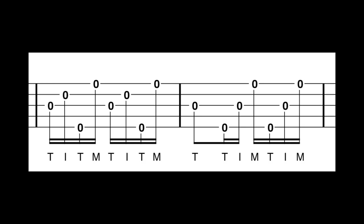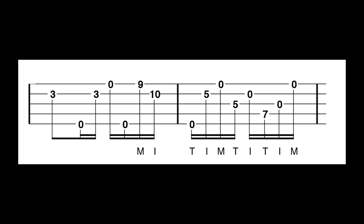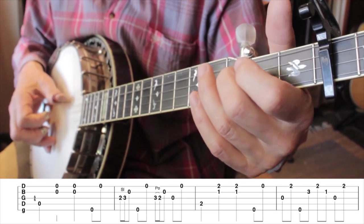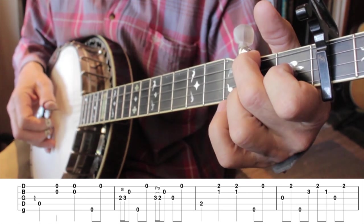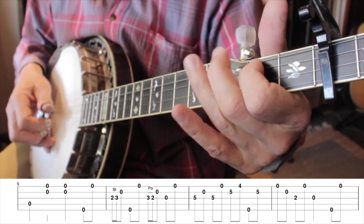Tablature can also show the right hand, or picking hand, fingers to use. T represents the thumb, I the index finger, and M the middle finger. Here's an example from a more complicated melodic run. Quite often the fingers of the picking hand are reasonably obvious, so they're left out to keep the tablature simple. Where the picking hand differs from standard, I will usually point this out and explain. So tablature allows us to notate banjo music with a simple system that's easy to learn and easy to understand. We'll use it a lot in the coming lessons.